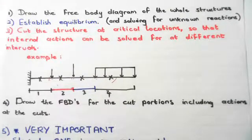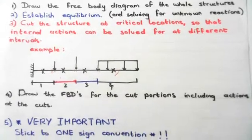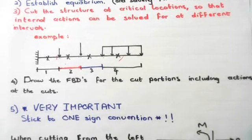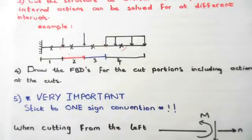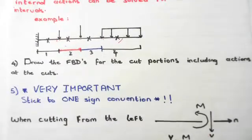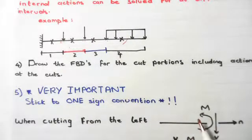The fourth step is drawing the free body diagrams of the cut portions, including actions at the cuts. Fifth, we must establish our sign convention for internal actions — this is extremely important and we must stick to one sign convention. If we cut from the left, our moment is anti-clockwise.